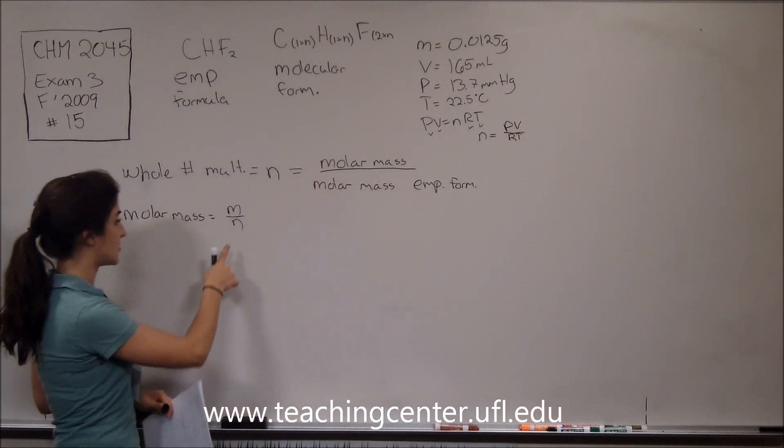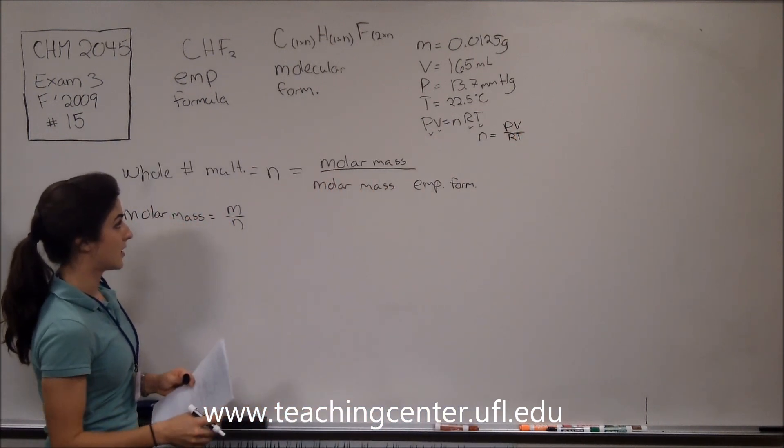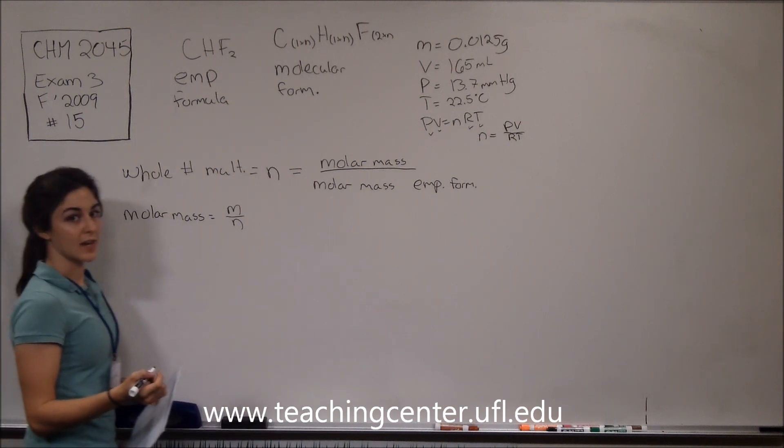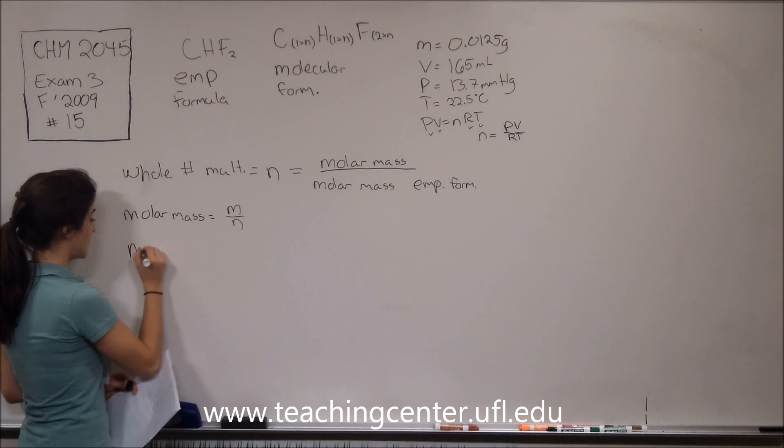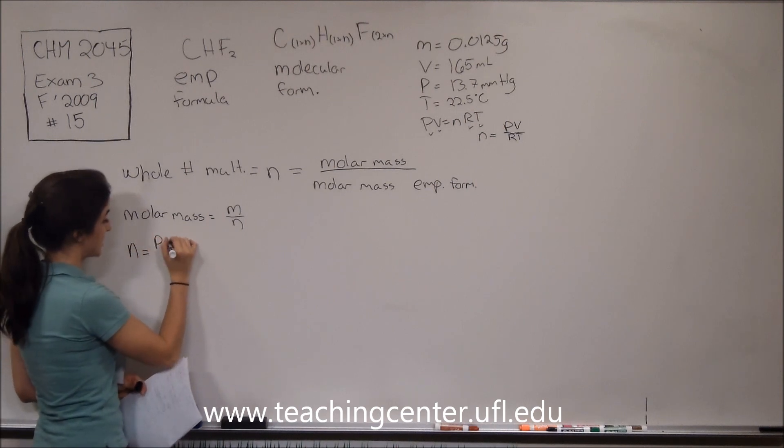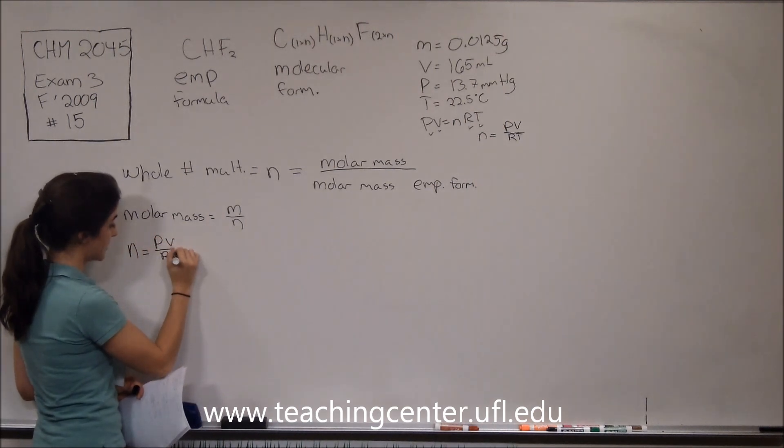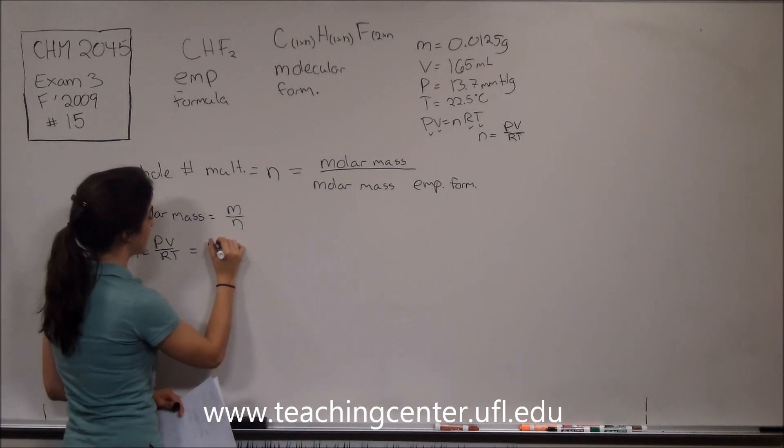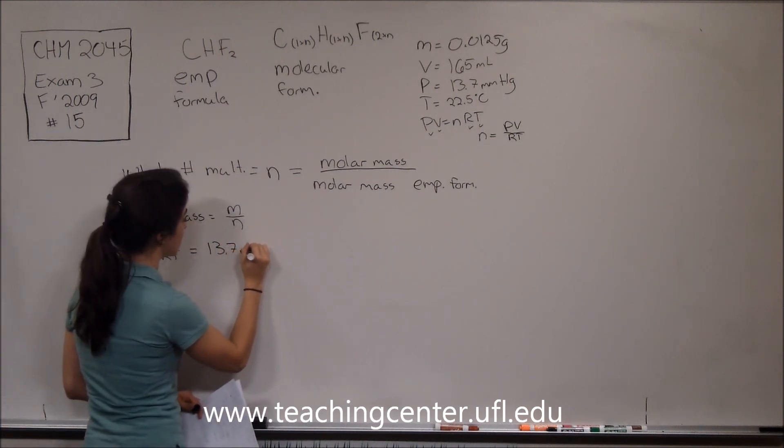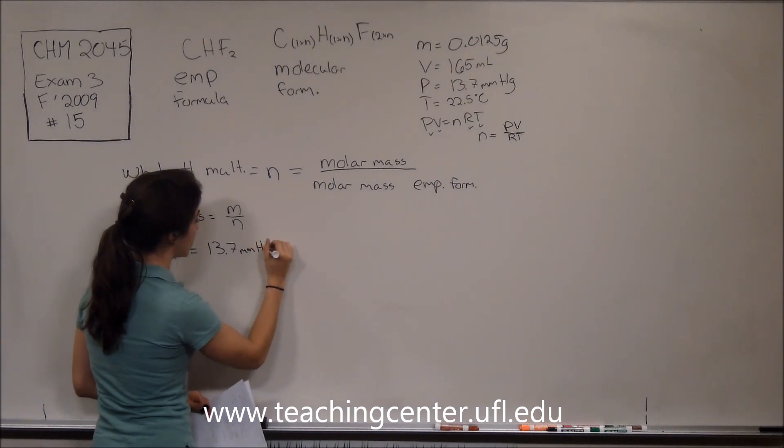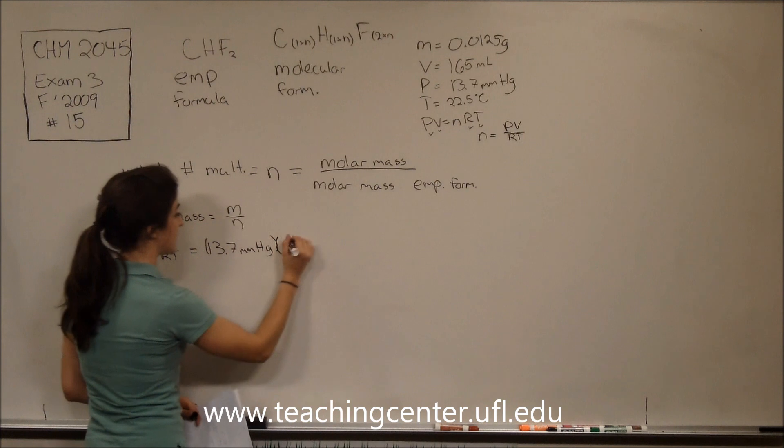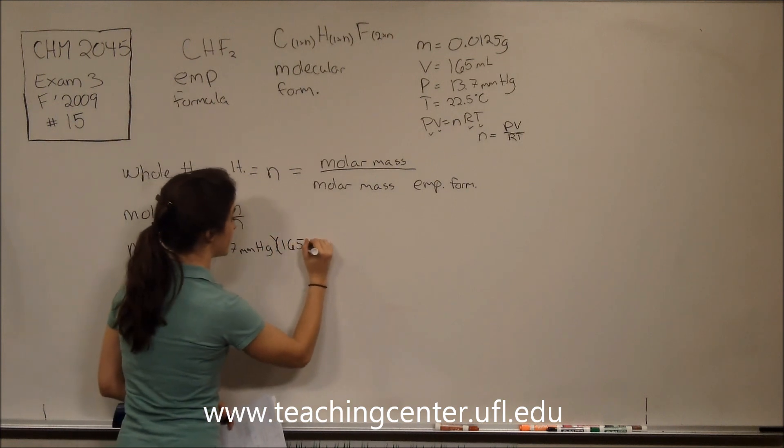So we'll plug that into this equation over here. But first it might be easier just to figure out the value for N. So N equals pressure times volume divided by RT. Pressure is 13.7 millimeters of mercury, and volume is 165 milliliters.